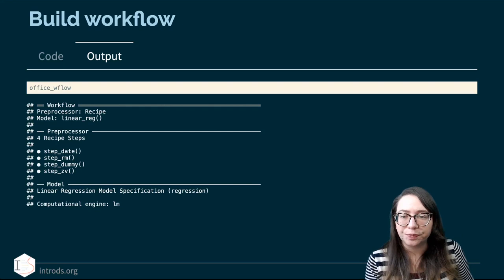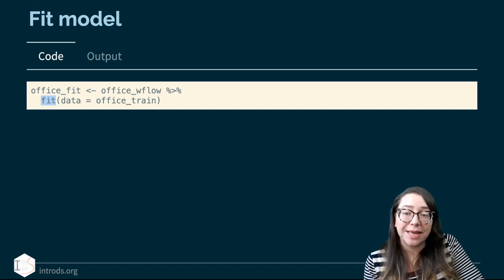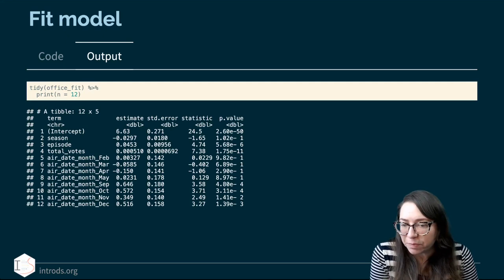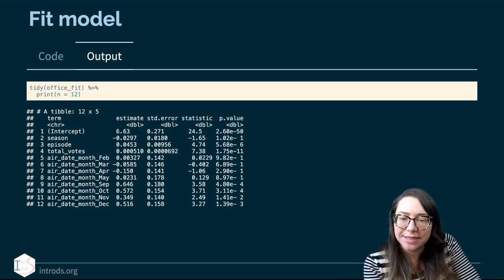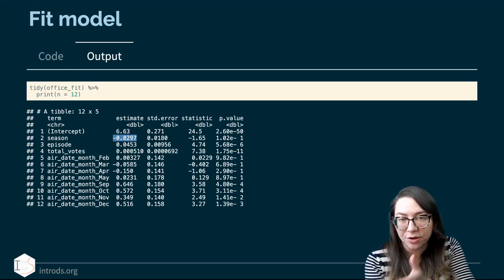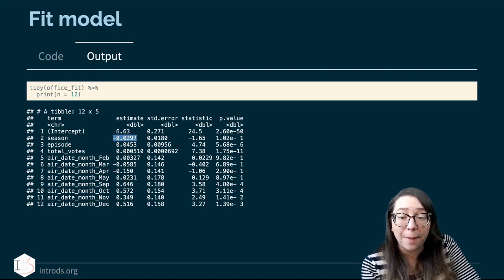We're ready to fit the model. We start with our workflow, office_wflow, and pipe it into the fit function, specifying the training data. Now let's look at this output — I've tidied the model output. For example, season has a negative slope coefficient, which tells me that for each additional season, the predicted IMDB score decreases on average by 0.0297. Episode number has a positive slope — later episodes within a season are rated higher on average — and total number of votes also has a positive slope.